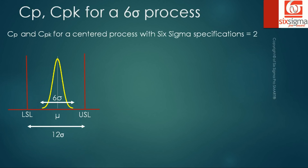Let's discuss CP and CPK for a centered process with six sigma specifications, where your customer wants six sigma capability. Since the process is centered, CP equals CPK. For a six sigma process, the specification width (USL minus LSL) equals twelve sigma, while the process width is six sigma. Taking the ratio gives CP equals two, and since the process is perfectly centered, CPK also equals two.